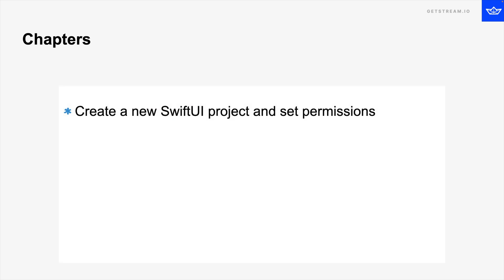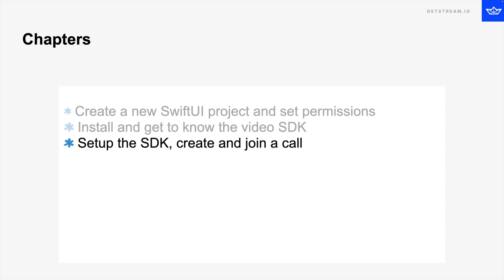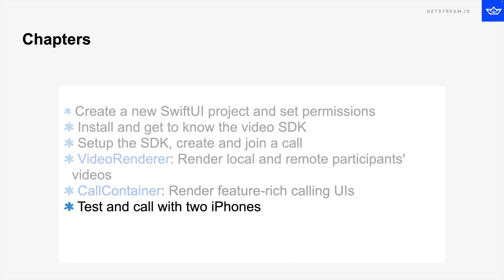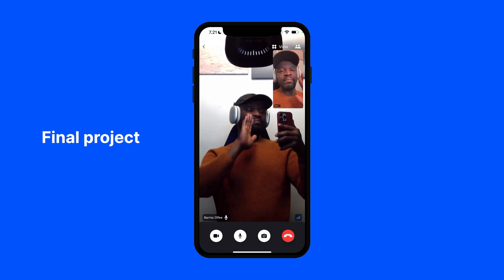I have divided this tutorial into different sections. We will begin by creating a new SwiftUI app, then I'll show you how to set permissions for microphone and camera. We will then install the SDK and get an overview of it. We will set up the SDK, create and join a call, then dive into the video renderer. I'll show you how to use the call container to render a fully featured calling UI. After creating the call, we will test it on multiple iOS devices with an iPhone and a companion web app.